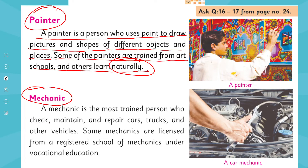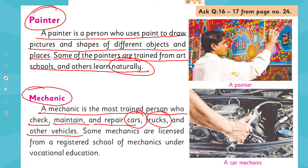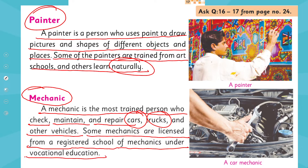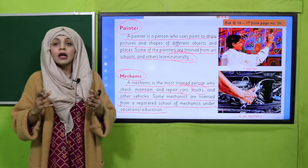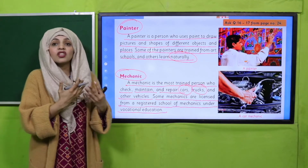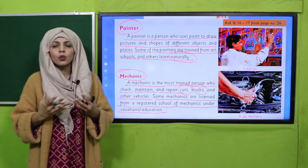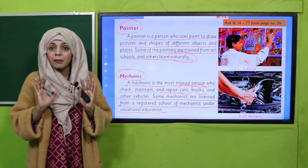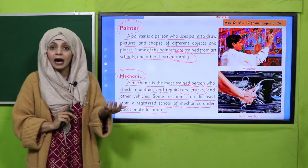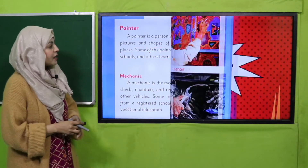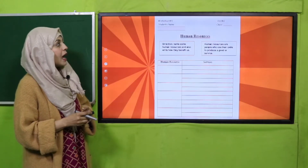Let's move towards mechanic — a very important human resource. Let's read: 'A mechanic is the most trained person who checks, maintains, and repairs cars, trucks, and other vehicles. Some mechanics are licensed from a registered school of mechanics under vocational education.' Now, technology has improved so much that we have aircrafts, buses, ships, cars, and motorbikes to travel from one place to another. For the maintenance of these vehicles, or if any problem occurs, you have mechanics. These mechanics are a very important human resource that helps us keep our vehicles fit and maintained.